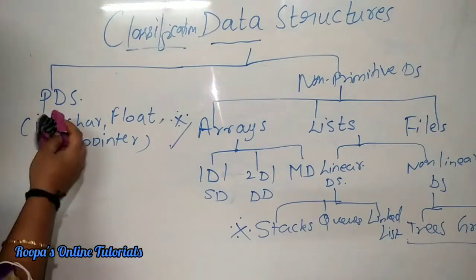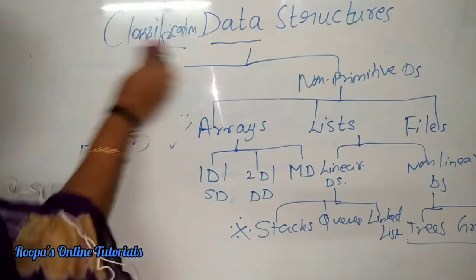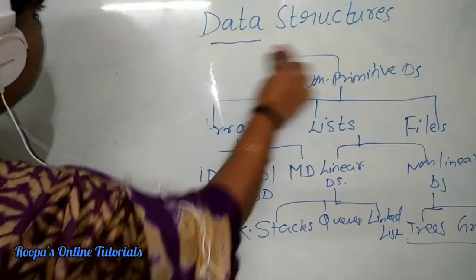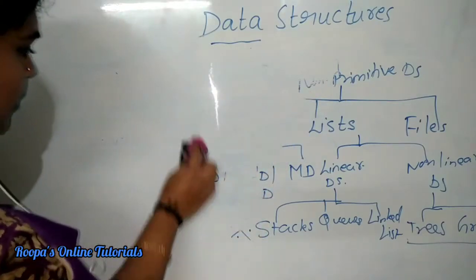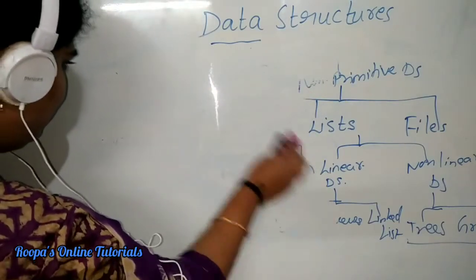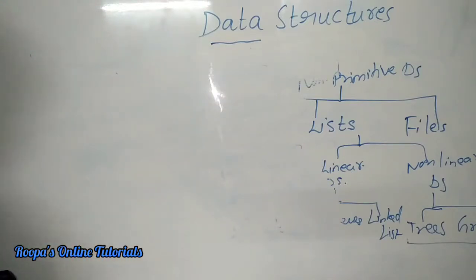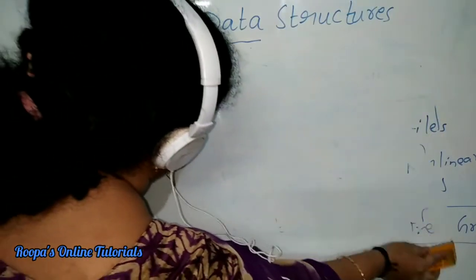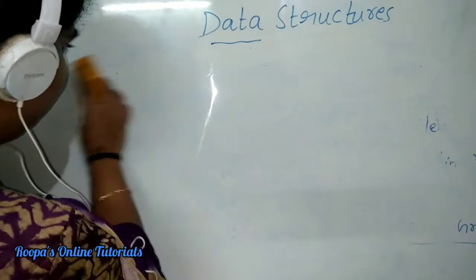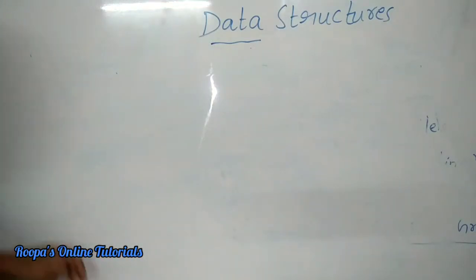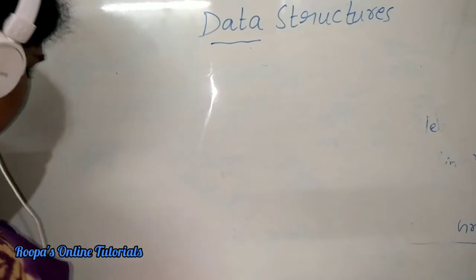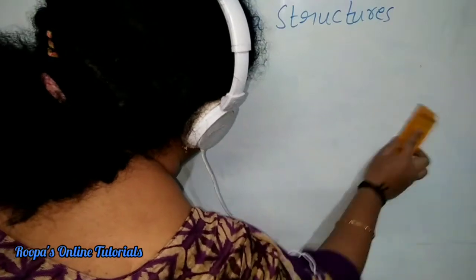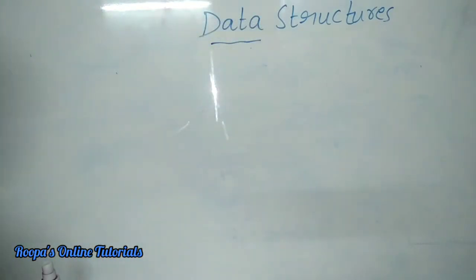That was explained in detail in the previous video. Today we are going to learn about the operations on data structures. What are operations? Think about a doctor performing an operation to cure a patient. Similarly, here we are going to do some work on the data structures — we are going to see how data structures do some work for us. Those are known as operations.